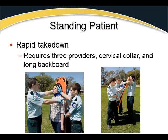A standing backboard requires at least three providers, a cervical collar, and a long backboard. After applying the C-collar, position the backboard behind the patient. Two providers get under the patient's arms in the armpits, grab the backboard, and lower it down as a unit. Communication is critical, and the provider holding C-spine behind the backboard must maneuver out of the path as the board comes down.